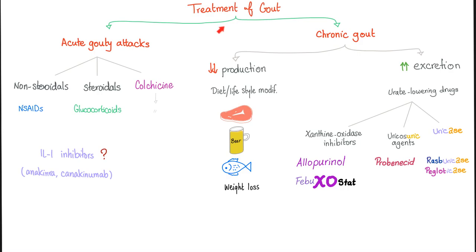Treatment of gout — there's acute gout and chronic gout. For acute gout: non-steroidals, steroidals, or colchicine. Colchicine works by inhibiting neutrophil chemotaxis. For chronic gout, decrease production or increase excretion using allopurinol or febuxostat because they are xanthine oxidase inhibitors. Probenecid will inhibit the reabsorption of uric acid. Rasburicase and pegloticase will destroy the uric acid.